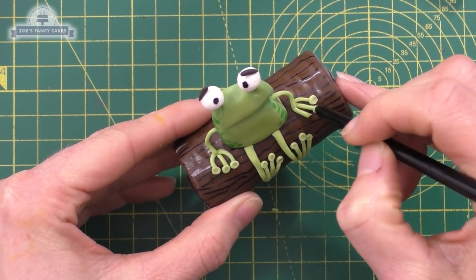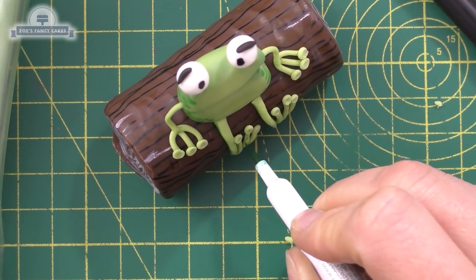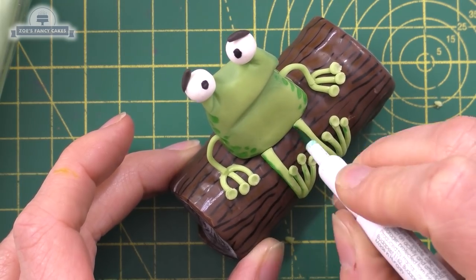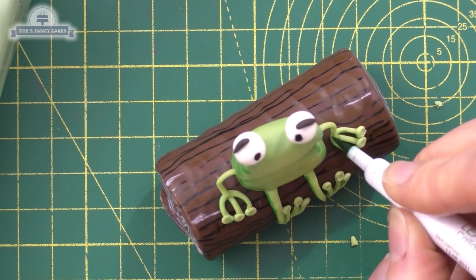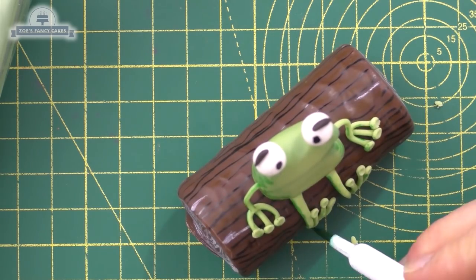I'm just going to add a bit of shading with my pen down the edge of each leg, arms, and fingers. It might be that you need to let it firm up a little bit first. You can see when I'm trying to do it, it's moving around just a little bit.